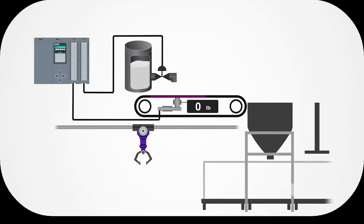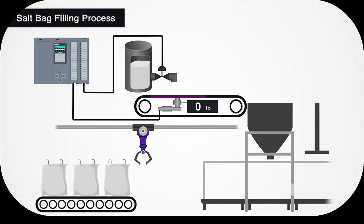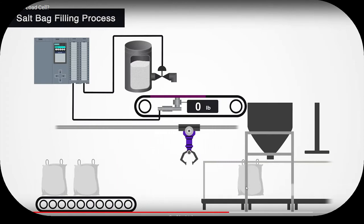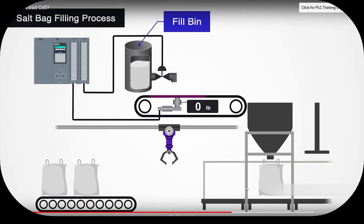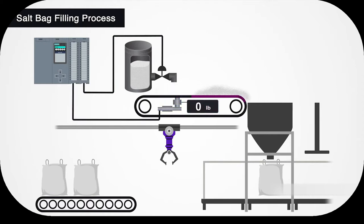The first application is a salt bag filling process. Empty bags are loaded into a machine where arms swing down, pick up a bag, and place it underneath a funnel. Above the funnel is a fill bin that dispenses salt onto a conveyor belt with a built-in load cell to dispense the correct amount. As the fill bin dispenses salt, the load cell gives an analog input to a PLC showing the current weight. Once the reading is close to the full bag weight, the fill bin closes to a trickle until the correct weight is reached, then the salt drops into the funnel and the bag is sealed.